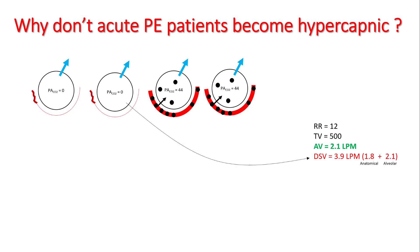Let's see what happens if the patient develops pulmonary embolism. We now have two alveoli with no blood flow through them — these are now dead spaces — which has increased dead space ventilation to 3.9 liters per minute and dropped alveolar ventilation to 2.1. Blood is now more directed towards the normal alveoli. CO2 is easily diffusible, so that shouldn't affect CO2 diffusion across the membrane; however, the new concentration of CO2 in the alveoli will be higher — let's say 44.